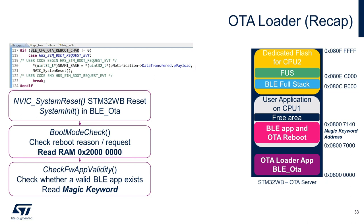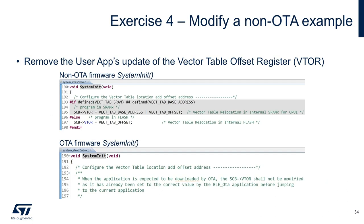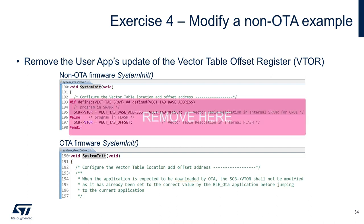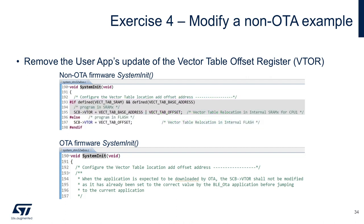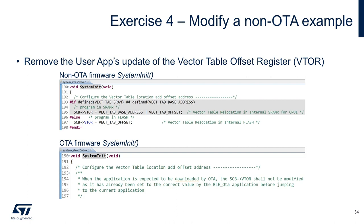After this, the STM32WB resets, and the OTA loader calls the boot mode check function to read that request type. Lastly, the code related to the vector table offset register has to be removed. This is because the OTA loader already sets the correct values for the vector table offset register. After removing this part, you have successfully created a BLE firmware with the OTA feature included.